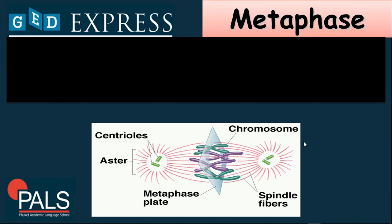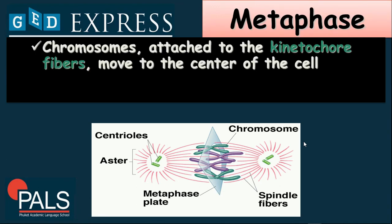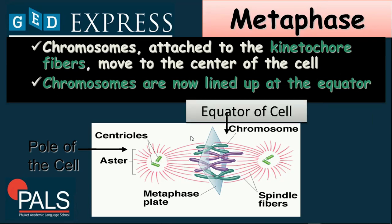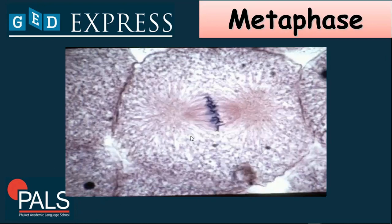After the prophase stage, we have metaphase. During metaphase, chromosomes attach to the kinetochore fiber and move to the center of the cell. Kinetochore fibers are also known as spindle fibers — the ones you can see in the drawing, like the lines which are colored red. Chromosomes are now lined up at the equator; they are aligned at the center. We have here an illustration of the metaphase stage where it is very evident that the chromosomes are aligned on the center, and you can see the spindle fibers.